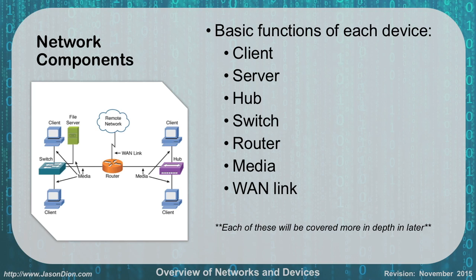So network components — what are the different components we're going to talk about? We're going to talk about all the things on this network diagram: clients, servers, hubs, switches, routers, media, and WAN links. We're going to go back later and talk about each of these in much greater detail. For instance, we'll spend an entire lecture just on switches, an entire lecture on routers, and an entire lecture on WAN links. But for right now, we're just going to cover each one as a brief overview.